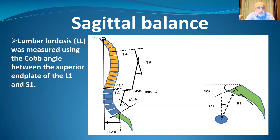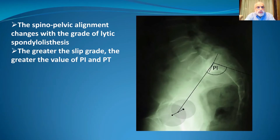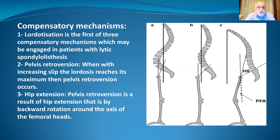Lumbar lordosis is measured with Cobb's angle between the superior endplates of L1 and S1. Spinopelvic alignment changes with the grade of lytic spondylolisthesis — the greater the grade of slip, the greater the values of pelvic incidence and pelvic tilt. There are three compensatory mechanisms: increasing lumbar lordosis, which is seen in patients with lytic spondylolisthesis until the lumbar lordosis reaches its maximum, after which pelvic retroversion starts to occur, and the third mechanism is increasing hip extension — all allowing compensation for sagittal balance.